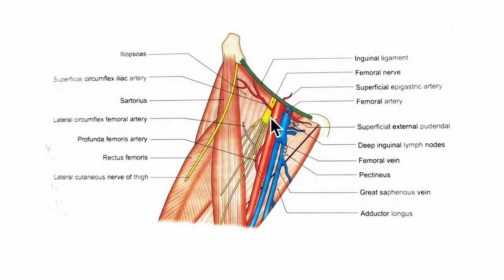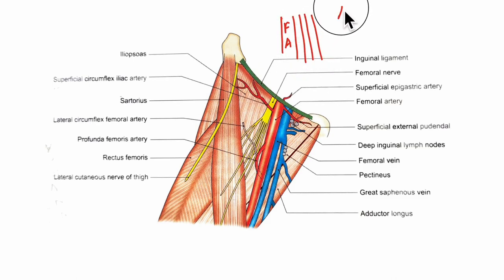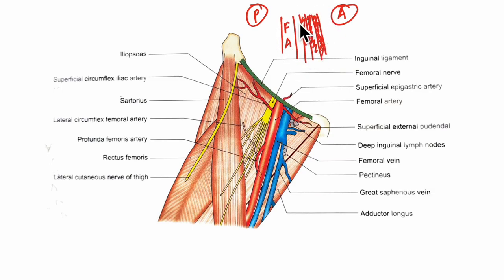Next, let's learn about the relations of the femoral artery in the femoral triangle. Looking at its anterior relations via a lateral cross section: the anterior relations include the skin, then the superficial fascia, the deep fascia, and the anterior wall of the femoral sheath.